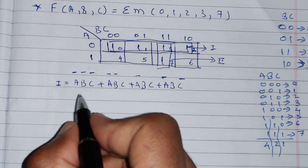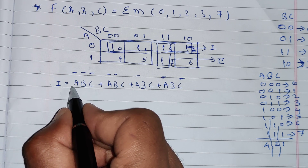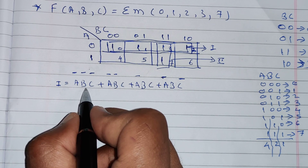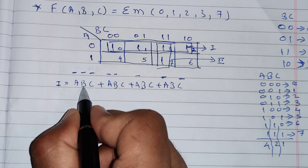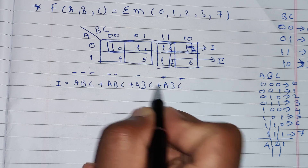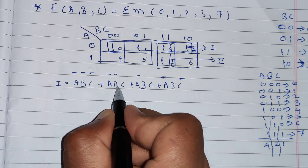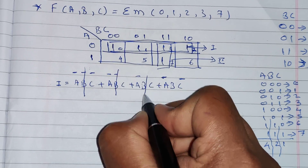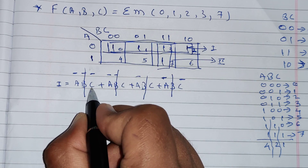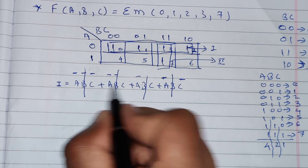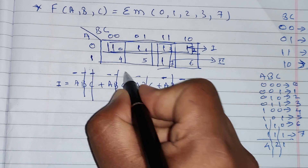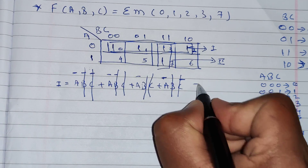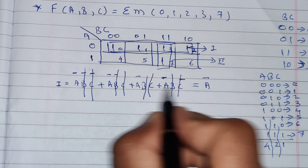Now, whichever term changes its value across the group, we cancel it. A̅ is constant in all four terms, so we keep it. B changes (B̅ and B appear), so we cancel B. C also changes (C̅ and C appear), so we cancel C as well. The result from Group 1 is A̅.